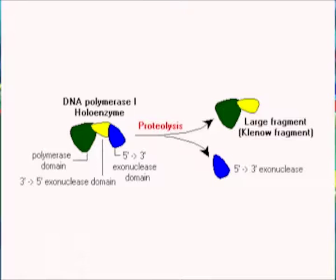DNA Polymerase I can also excise mismatch regions in DNA. The Klenow fragment is a proteolytic product of E. coli DNA Polymerase I that retains polymerization and 3' to 5' exonuclease activity but lacks 5' to 3' exonuclease activity. This Klenow fragment can synthesize a new DNA strand complementary to the template but cannot degrade the existing strand. The Klenow polymerase is now rarely used in sequencing and has its major application in DNA labeling.